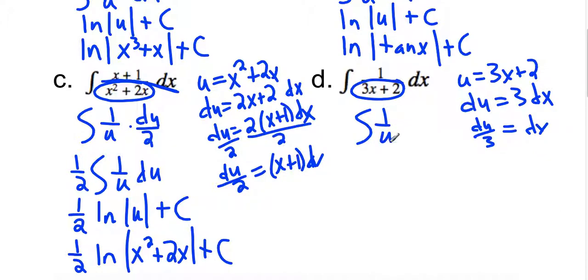So we get 1 over u, du over 3. Factor out that 1 third. Integrate. And then plug back in.